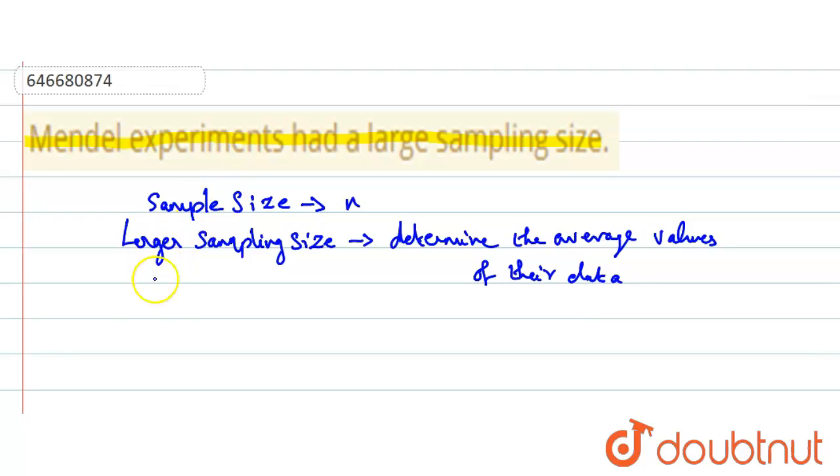Mendel experiments had a large sampling size. In 1865, Mendel presented the results of his experiments with nearly 30,000 pea plants.